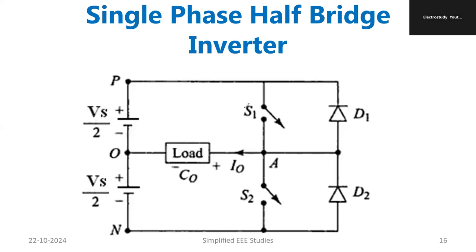We have the circuit diagram of the single-phase half-bridge inverter. As you can see, S1 and S2 are the two power electronic switches, and D1 and D2 are freewheeling diodes to ensure the protection of the power switches S1 and S2 respectively. Otherwise, reverse voltage will appear across the switches and damage them. The freewheeling diodes prevent this by providing a freewheeling action.